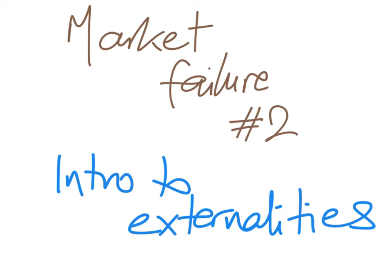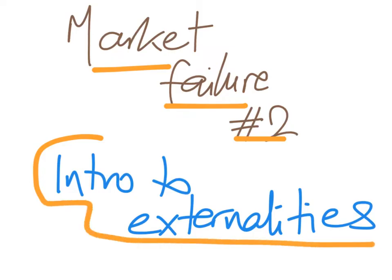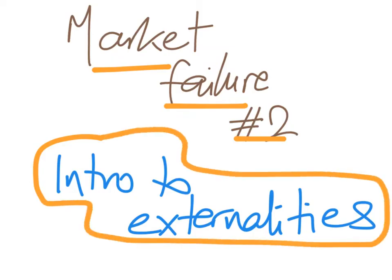This is the second of a series of videos on market failure. In this video we're going to introduce the idea of externalities. We're going to explain and describe the concept and we're also going to explain the concepts of marginal private cost, marginal social cost, marginal private benefit and marginal social benefit. So this is an introduction to externalities in general.